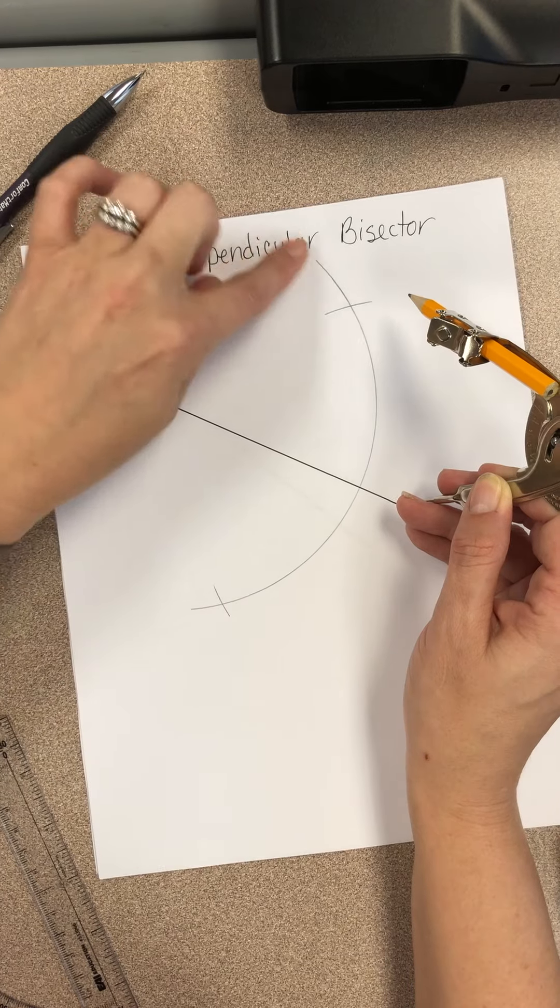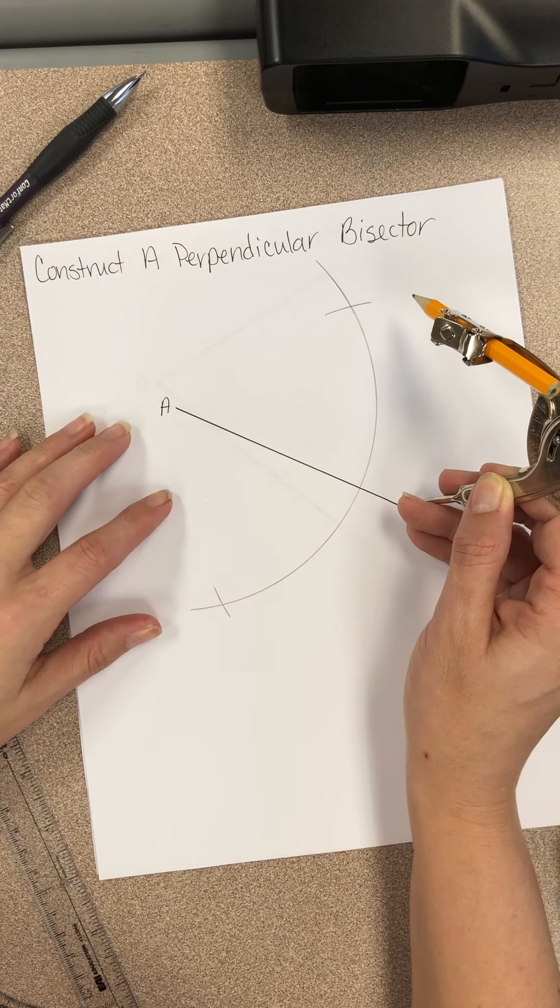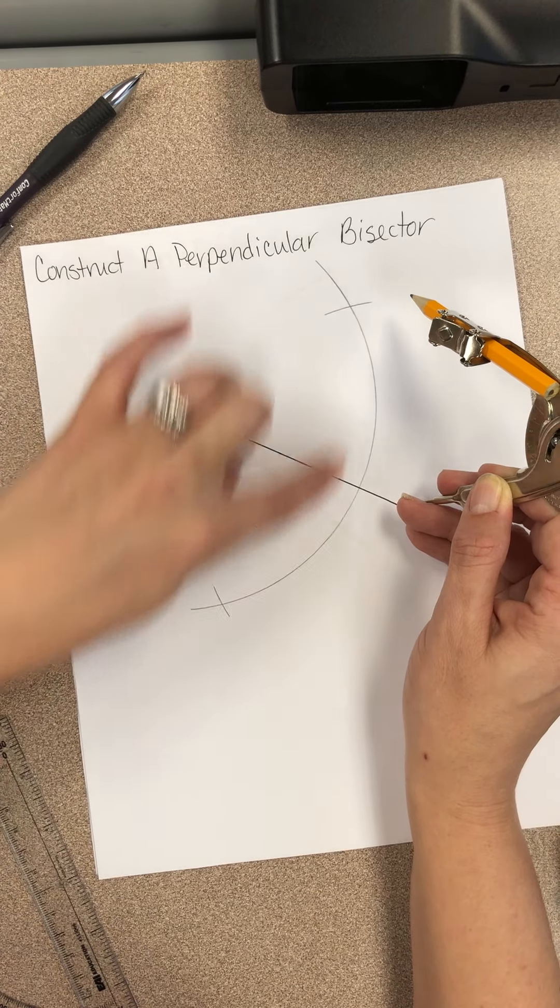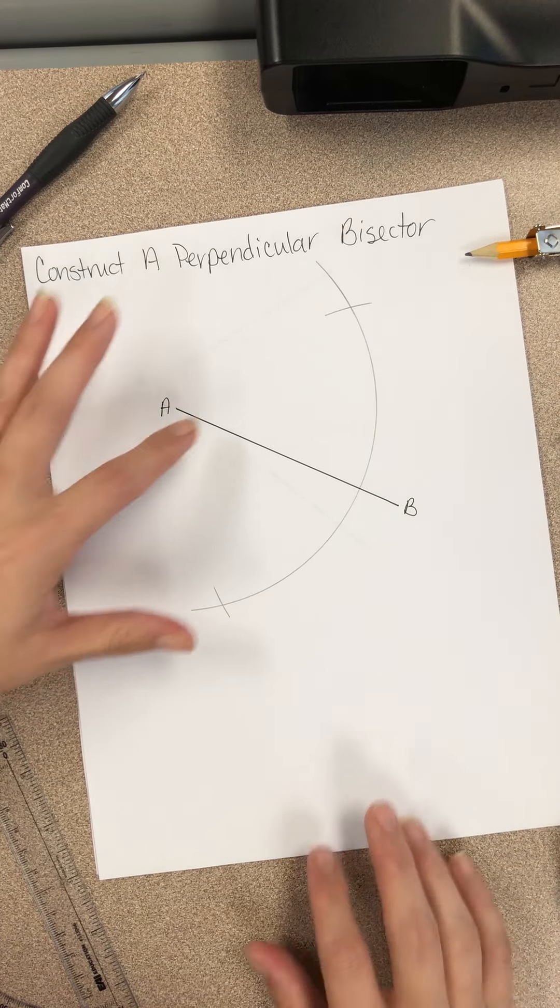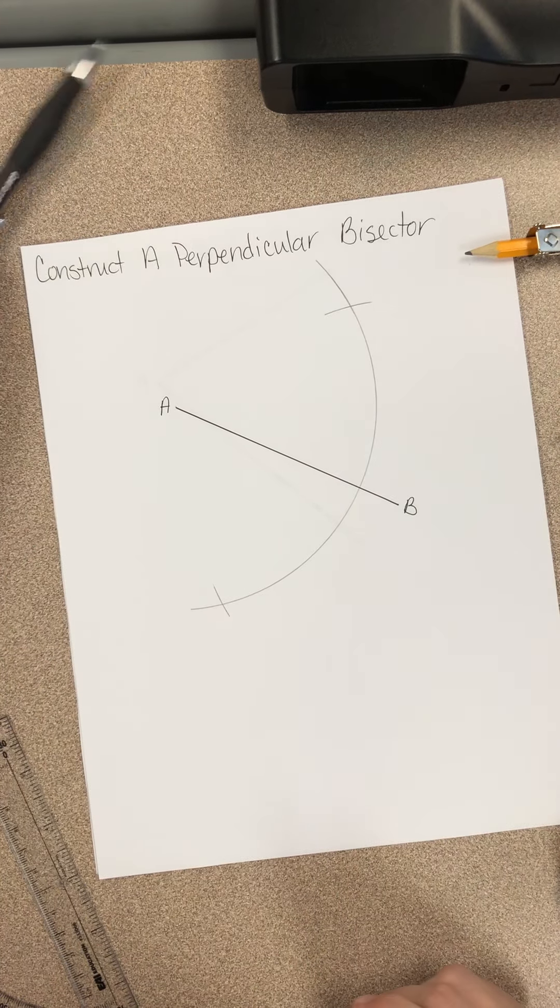The problem with making the first one little is it may not be long enough. And so I really suggest that you might make the first one really big. Unless you're just really good at guessing where the middle is. That works too.